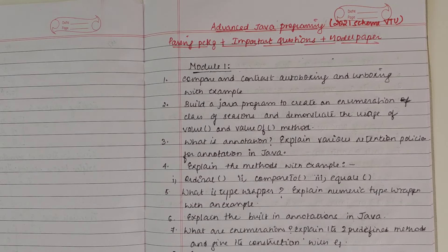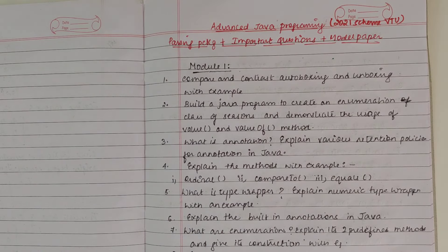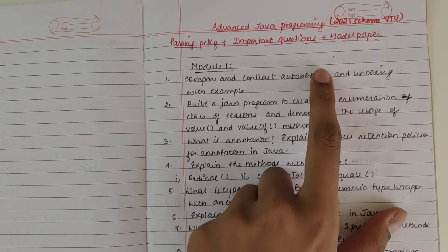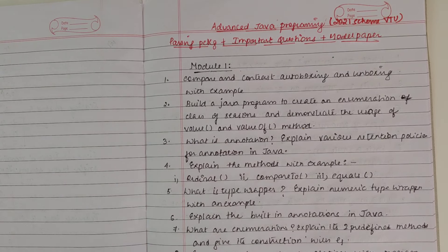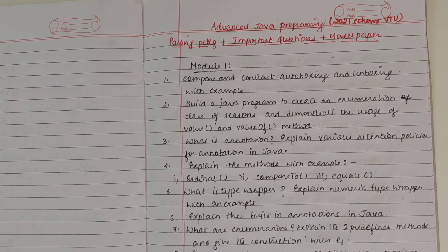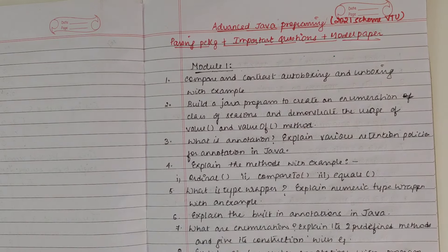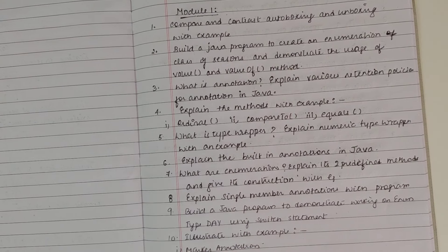First module: important questions. First question is difference between autoboxing and unboxing. Then we have Java programs to build, to create an enumeration class of seasons and demonstrate the usage of value and valueOf methods.